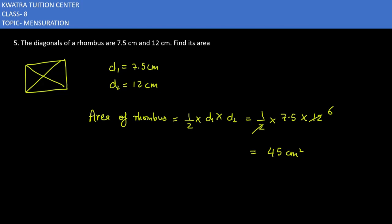So yes, the area of rhombus will be 45 cm square. That's your answer for question number 5. Now we'll be moving to the next one, the 6th question.